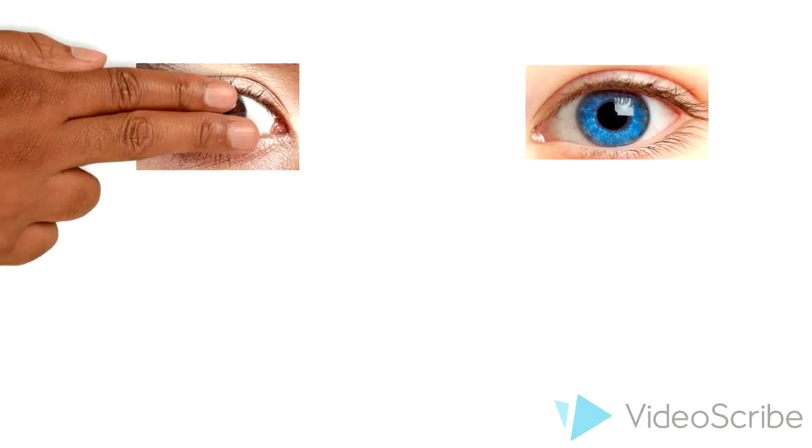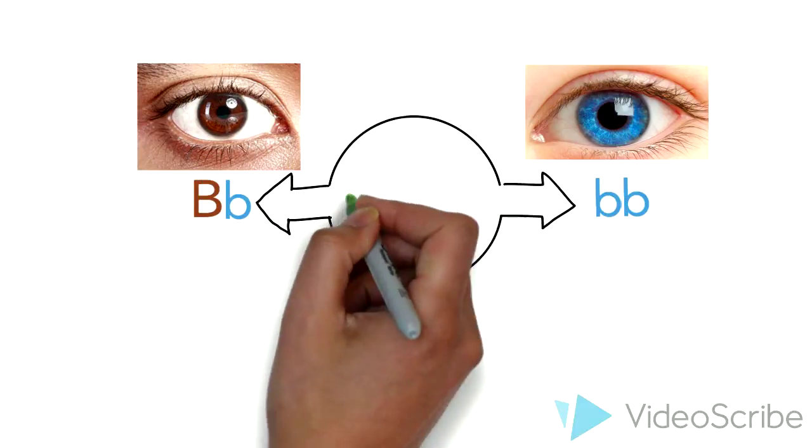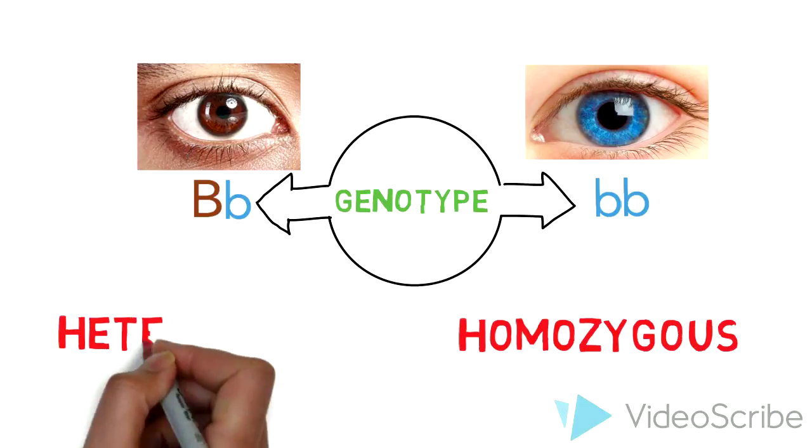Let's take for example eye color. Let's say your mother has blue eyes and your father has brown eyes. When an individual has two of the same alleles, they are known as homozygous, otherwise they are heterozygous.